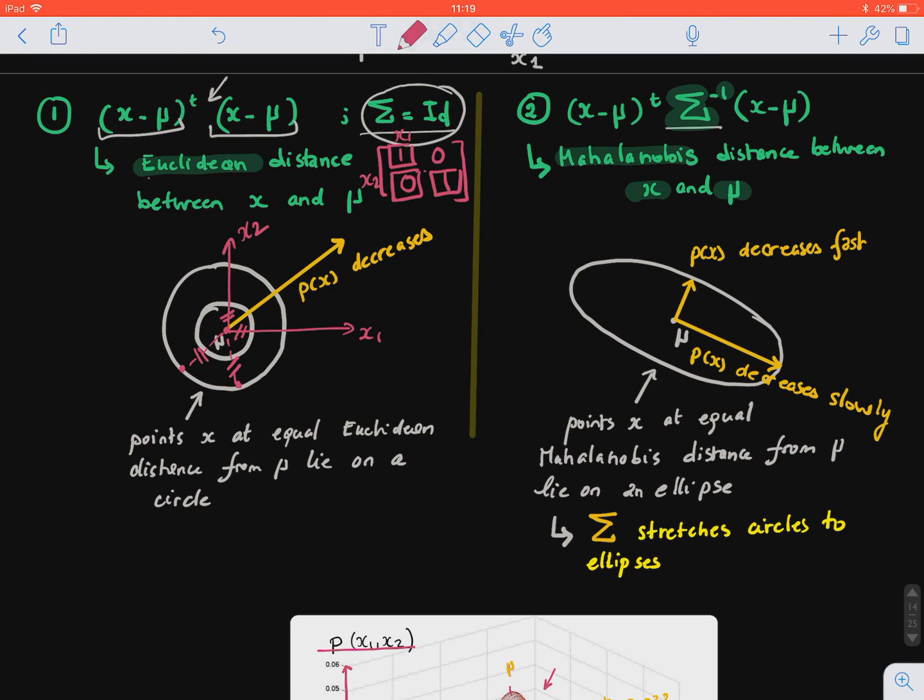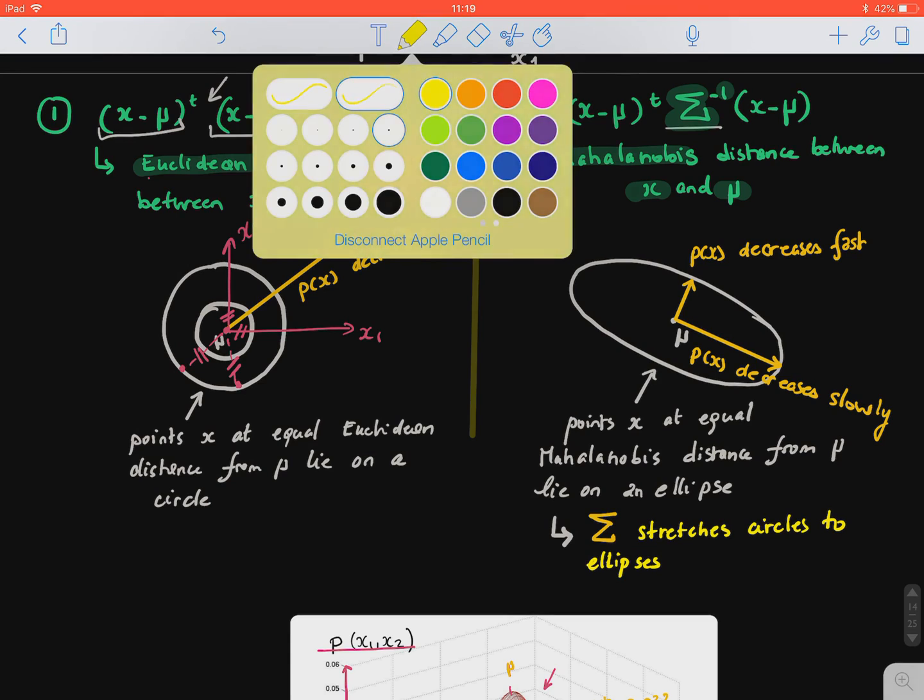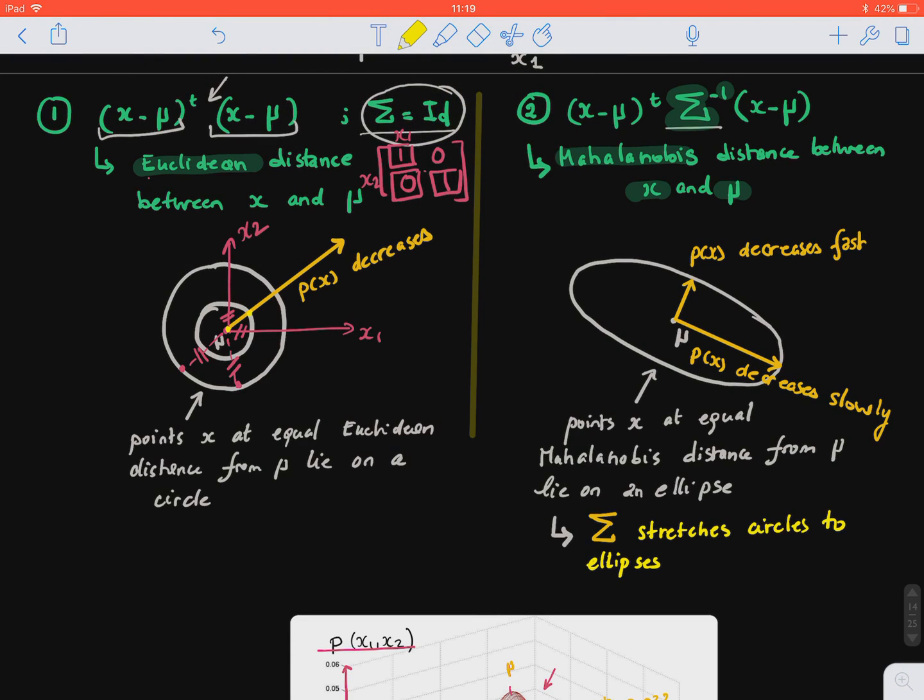Now, what we also notice is the further away we go from the mean, so the probability will decrease. So in this case here, in this measurement, the probability here is larger than the probability in the next ring or in the next circle.